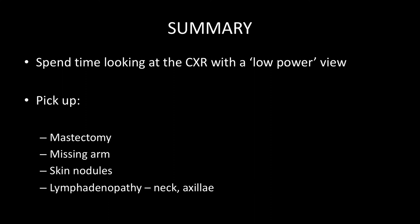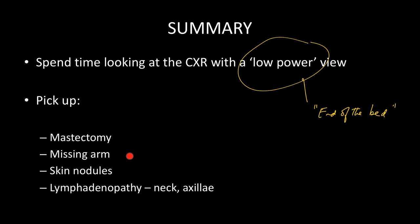In summary, it's well worth spending time looking at the chest x-ray with a low power view — or as I like to call it, looking at the chest x-ray as if you're looking at the patient from the end of the bed. In this way, you'll pick up a mastectomy, a missing arm, skin nodules, and lymphadenopathy in the neck and axilla. When you see all of these features by looking at the film from a distance, you'll then be able to hone in on the film looking for evidence of metastatic disease, neurofibromatosis in the case of skin nodules, and lymphoma confirmed by looking at the edge of the film.